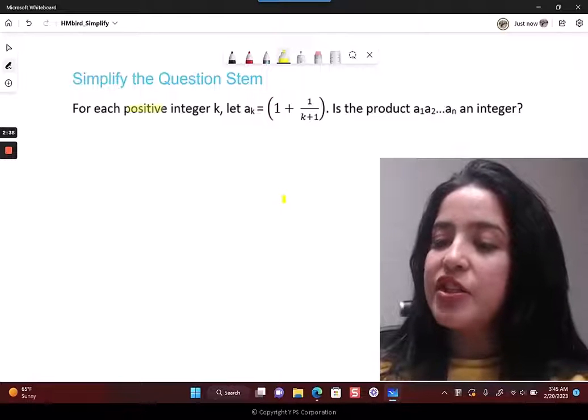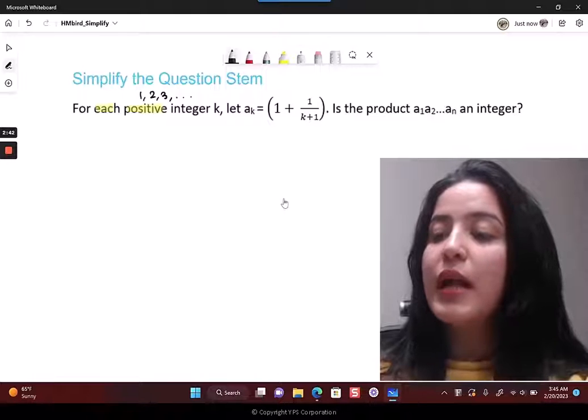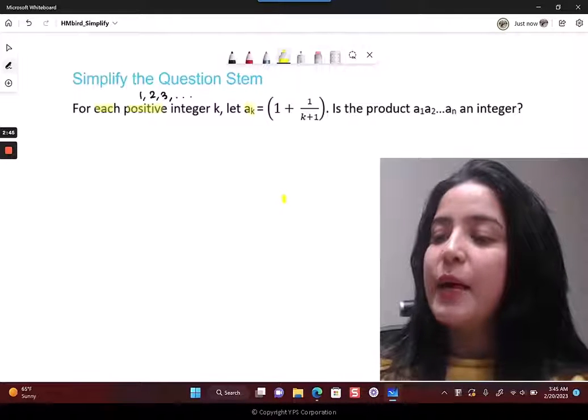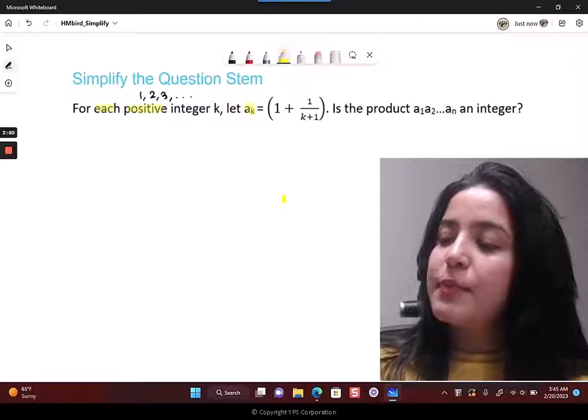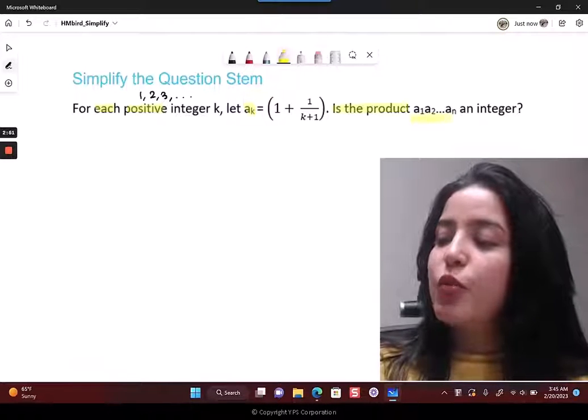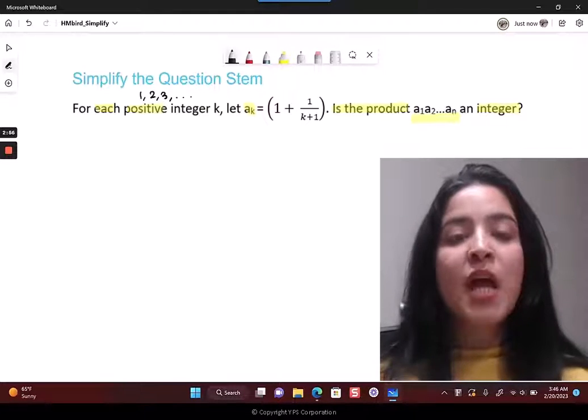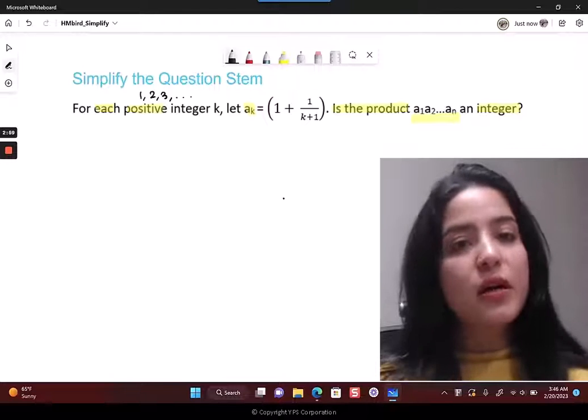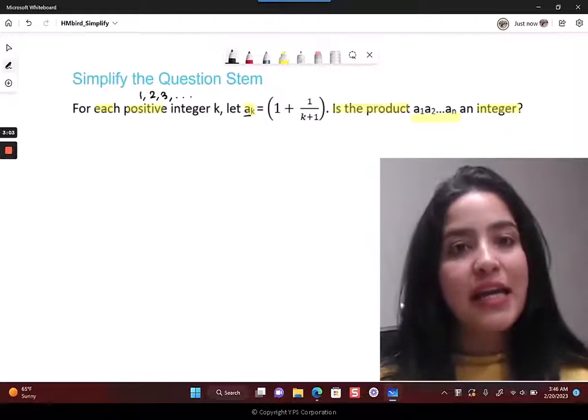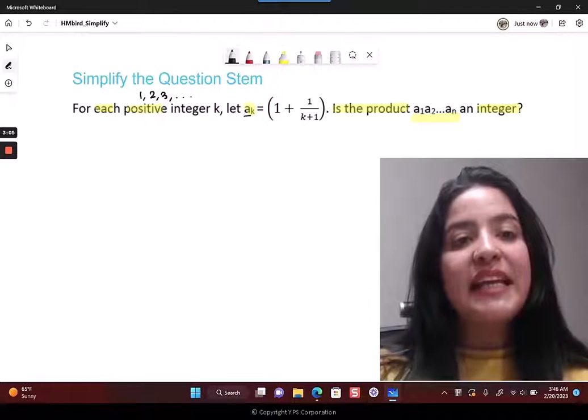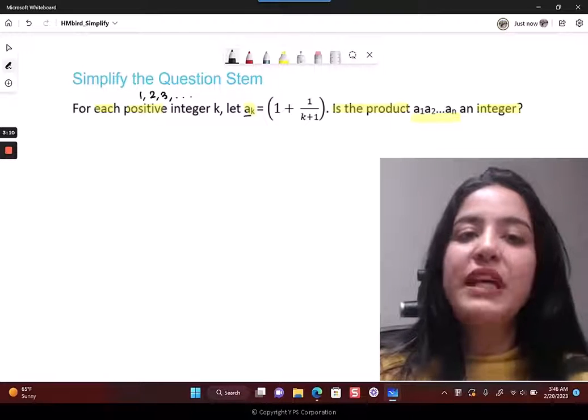For each positive integer - 1, 2, 3, and so on - let ak be defined this way: 1 plus 1 upon k plus 1. Positive integer 1, 2, 3 is what I have, and then ak is given in terms of k. What does this mean? It means that each term of this sequence can be determined for every k.